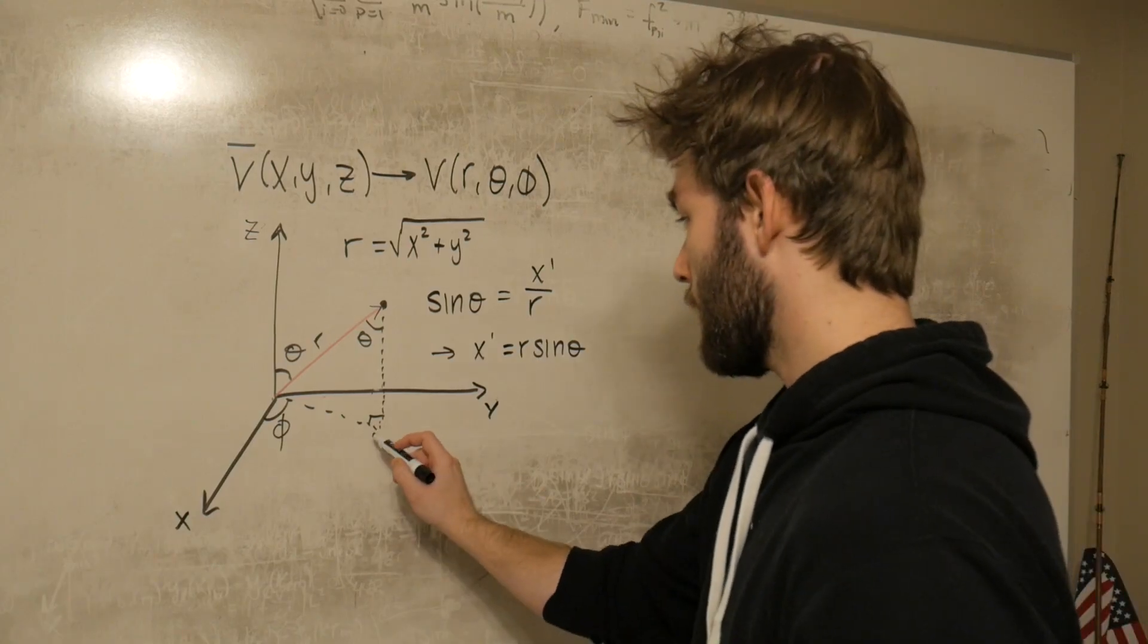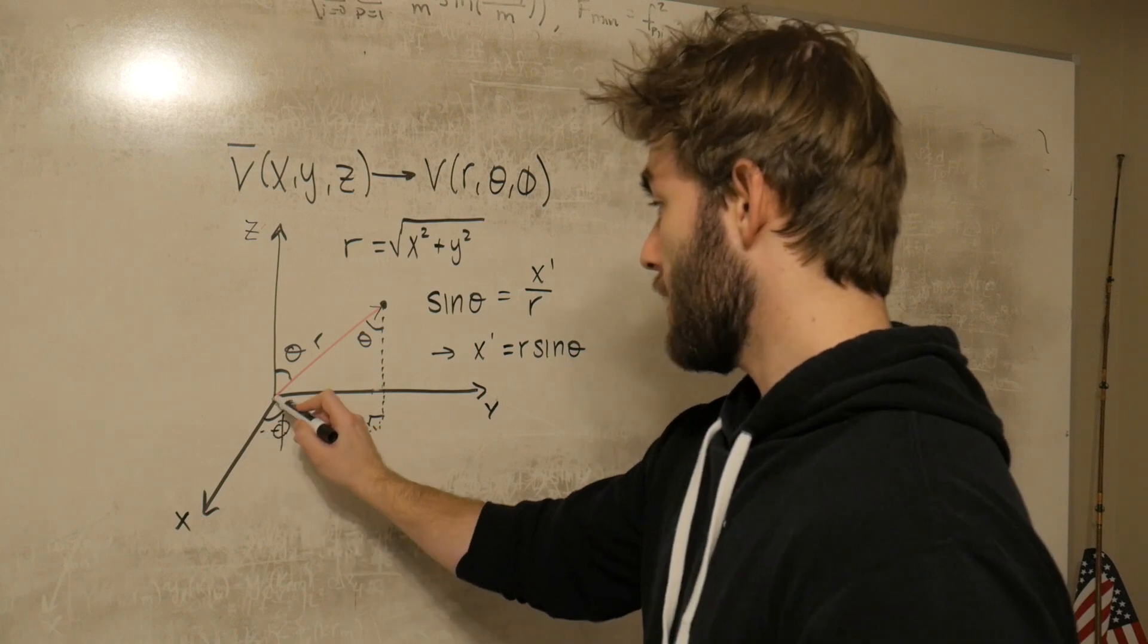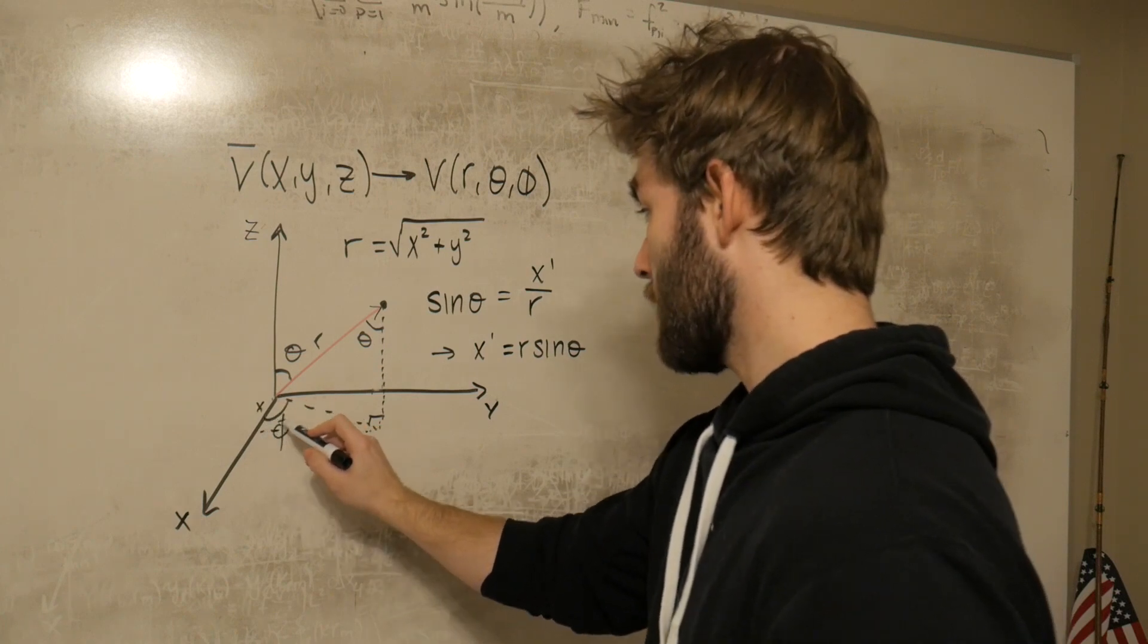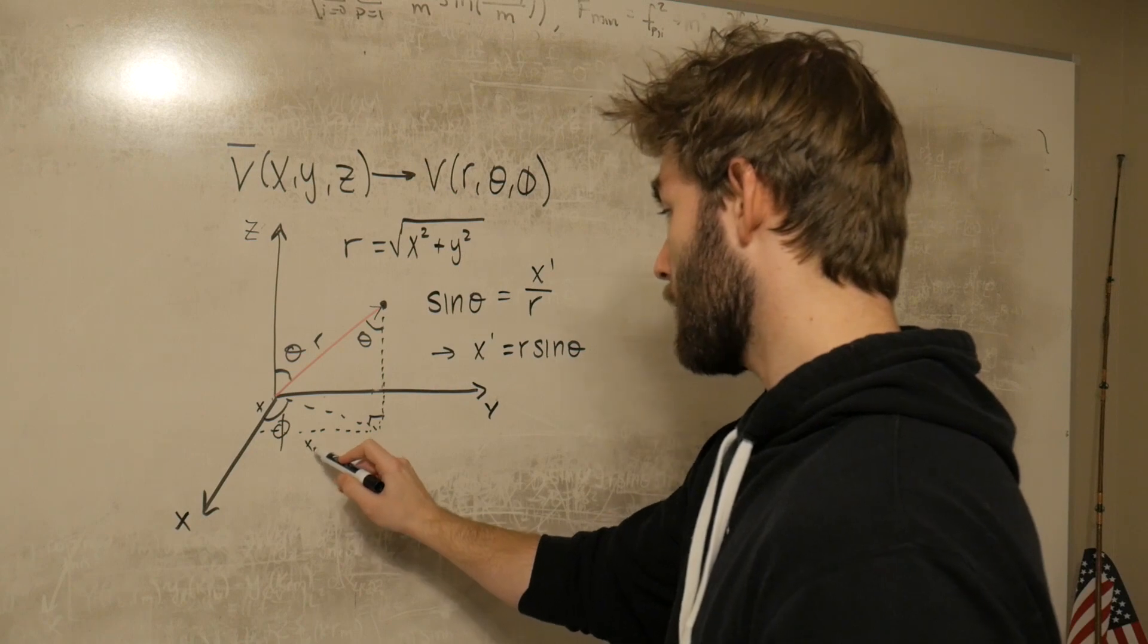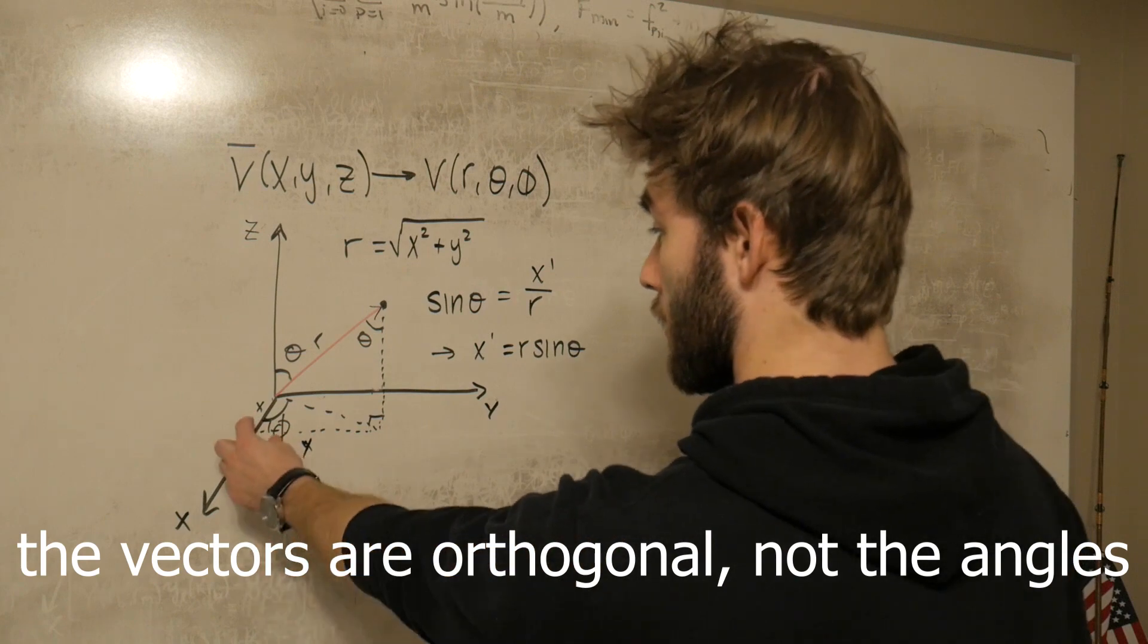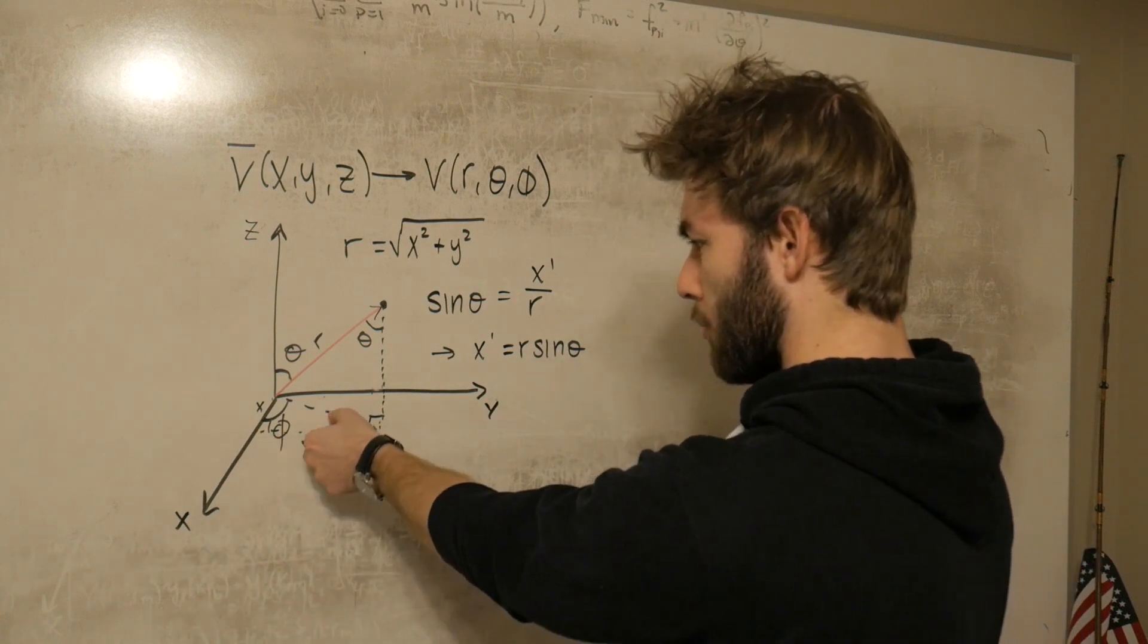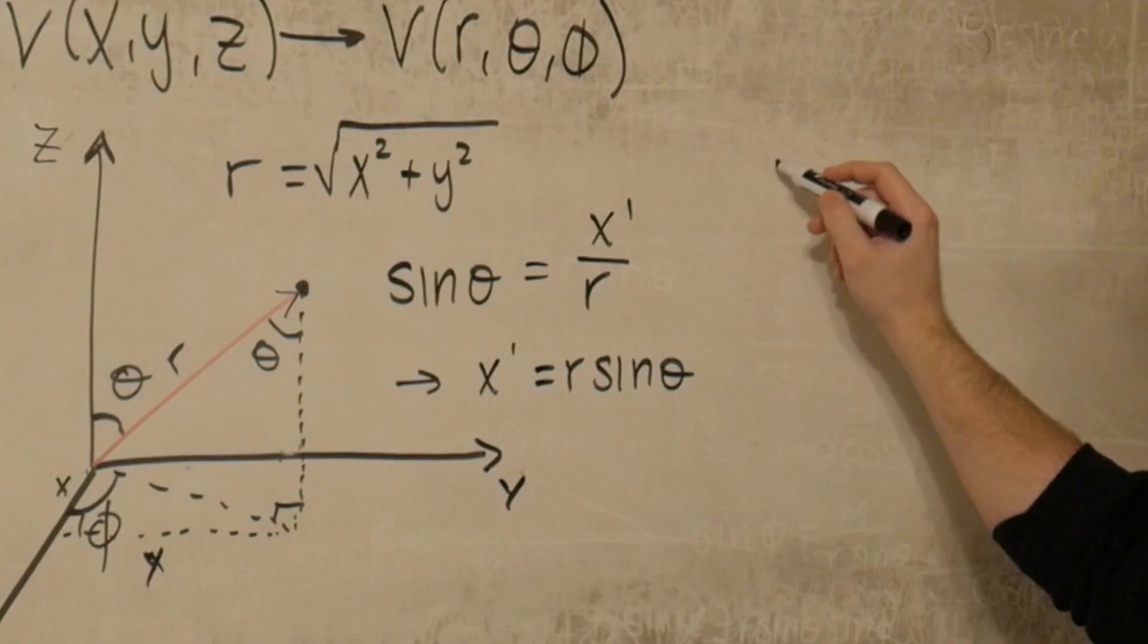Now what we can also do is we can create another triangle here. So this distance is in the x direction, and this distance is in the y direction, which tells you that this here is going to be orthogonal. Those two angles are going to be orthogonal, and we have a right triangle. So let's blow up this right triangle a little bit so we can see what we're looking at.